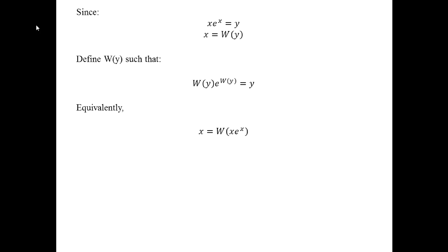Another way to make the substitution is to note that y equals x times e to the x, and then plug that into the second line for y. When you do that, you find that x equals W of x times e to the x, which makes sense — because x times e to the x is the forward operation, and then W is going to undo that operation. So when you do that whole process, you just get x back out.